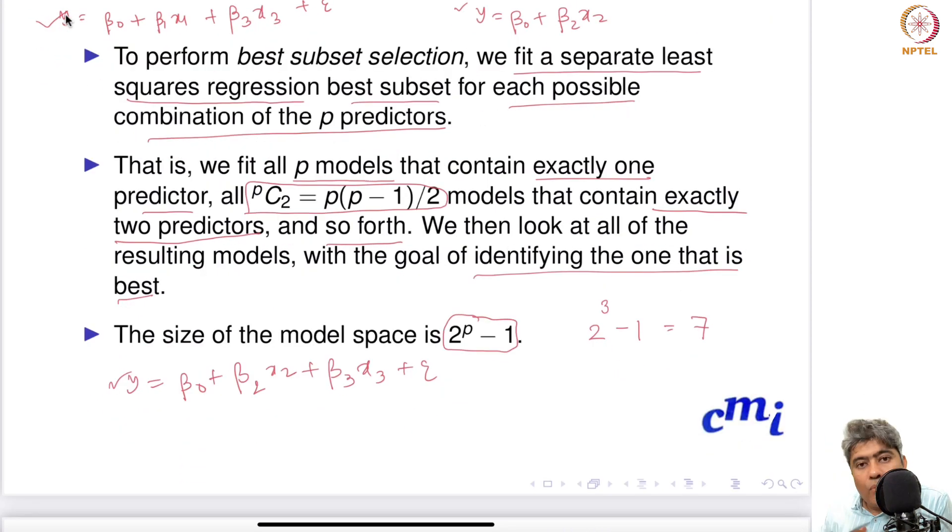What happens if you have ten many features? Then you have to fit 2^10 - 1 many models. Can you just use your calculator and figure out what is that number?